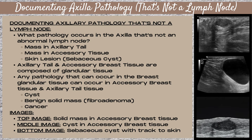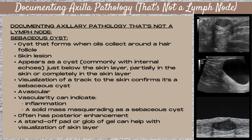The middle image is a cyst within accessory breast tissue. Because the cyst is so large it's hard to appreciate the accessory tissue, but the white glandular accessory tissue is superficial — right underneath the skin line — with a thin rim of tissue around the cyst. The bottom image is a sebaceous cyst, a skin lesion, with its hallmark feature: a track to the skin. A sebaceous cyst forms when oils collect around a hair follicle; it appears as a fluid collection that commonly has internal echoes, located in or just below the skin layer. The thin black line anterior to the cyst is the track of the hair follicle, and visualizing this track confirms it is a sebaceous cyst.